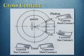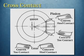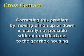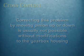If the pinion is too low, the convex side of the gear has toe contact and the concave side has heel contact. Again, corresponding contact errors are also found on the pinion. To correct this error, the pinion would need to be moved up. Be sure to note that correcting this problem by moving the pinion up or down is usually not possible without modifications to the gearbox housing.